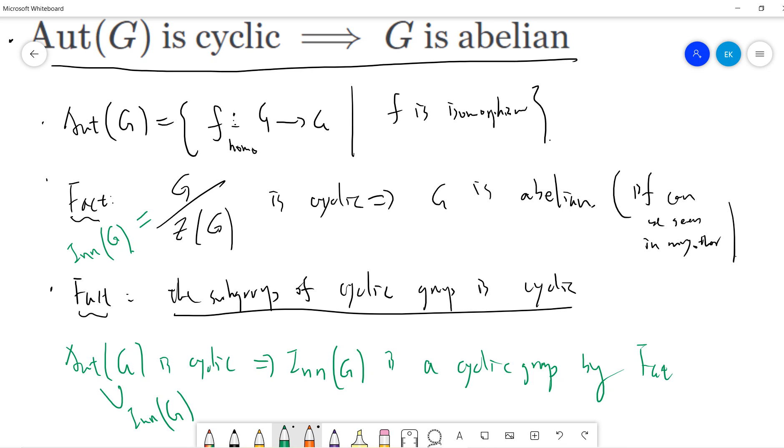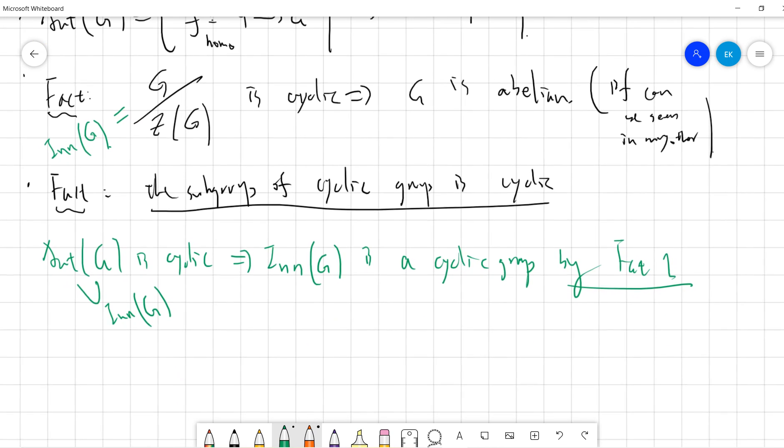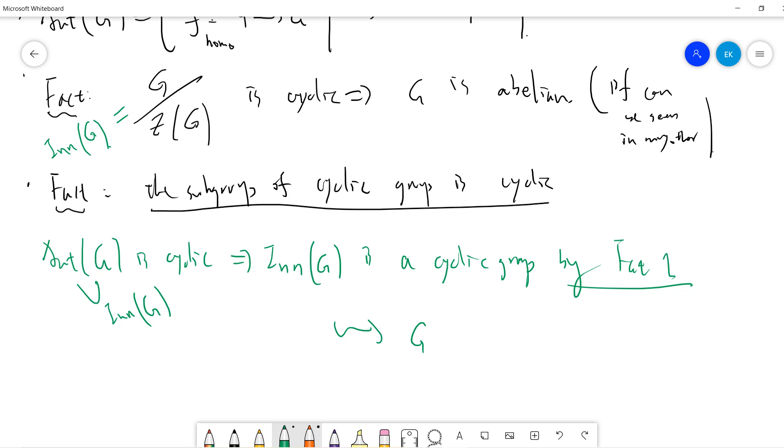And by fact one, we know that G is abelian.